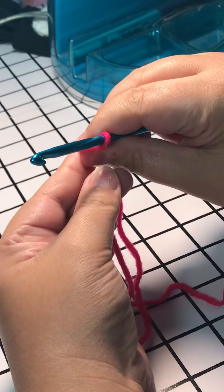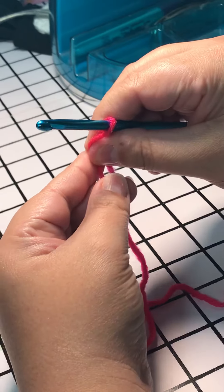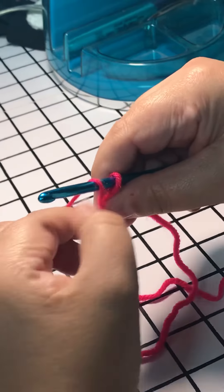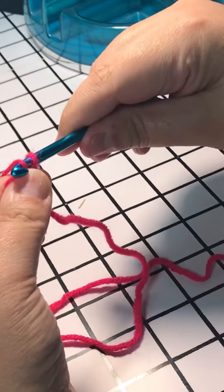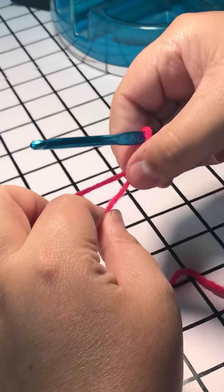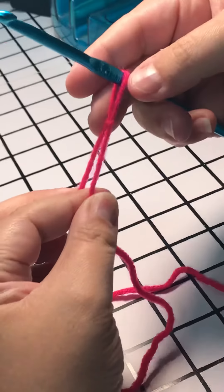Then switch back to the thumb and index finger of the hand that has your hook. Take your tail, put it over your hook to yarn over, grab it with your hook, pull it through the loop, then tug. And there you have your slipknot.